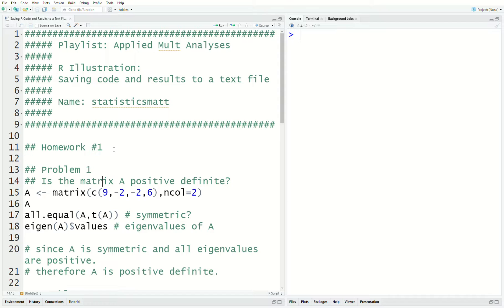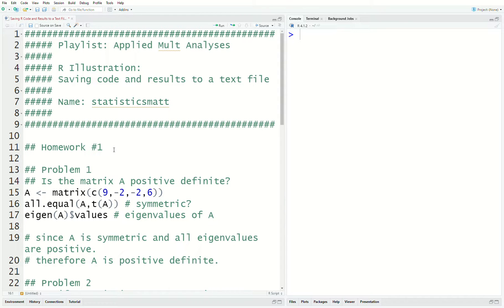So, here on the left side is your script file where you write your code. And as a matter of fact, I'm going to delete some things because I want to show you what I did first. And the problem is we want to show that matrix A is positive definite. How do we do that?